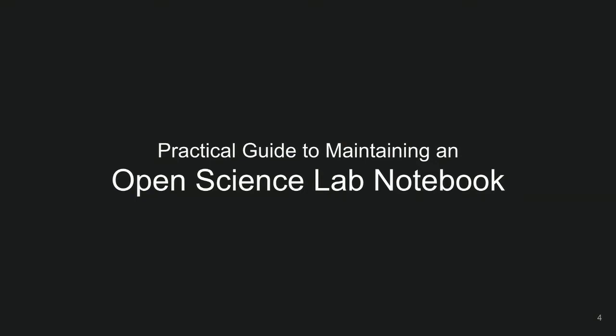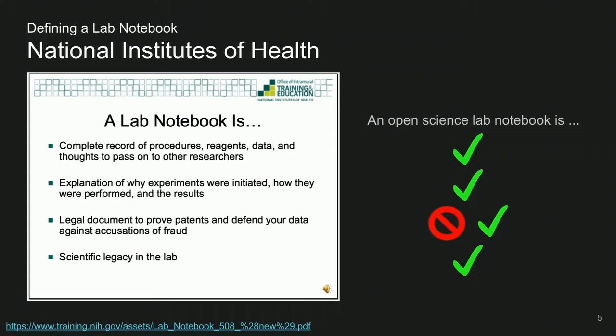In a software package, primary users don't interact with the code — they interact with a product the code generates, whether a command line tool or GUI. In an analysis module, primary users actually interact with the code, and most often you yourself or future you will be the primary user, though others can also interact with it in the open. The NIH defines a lab notebook as a complete record of procedures, reagents, data, and thoughts to pass on to other researchers — an explanation of why experiments were initiated, how they were performed, and the results. An open science lab notebook on GitHub fulfills all of these things.